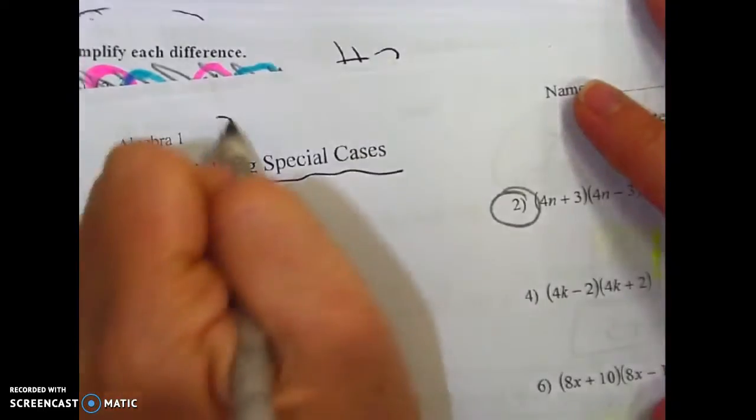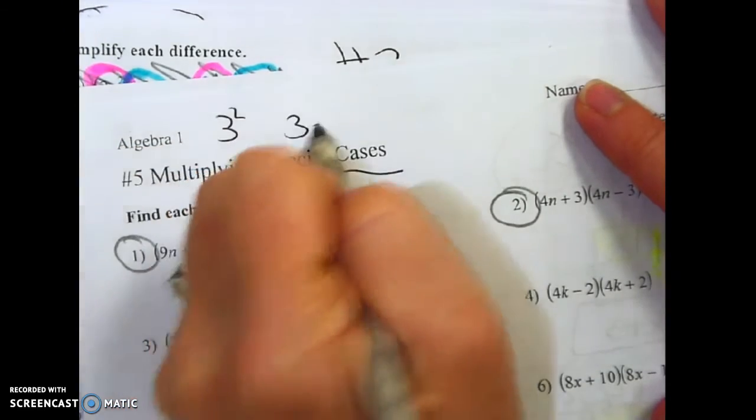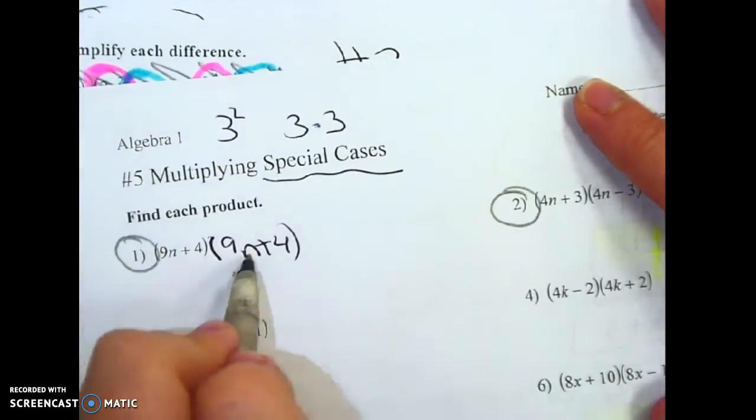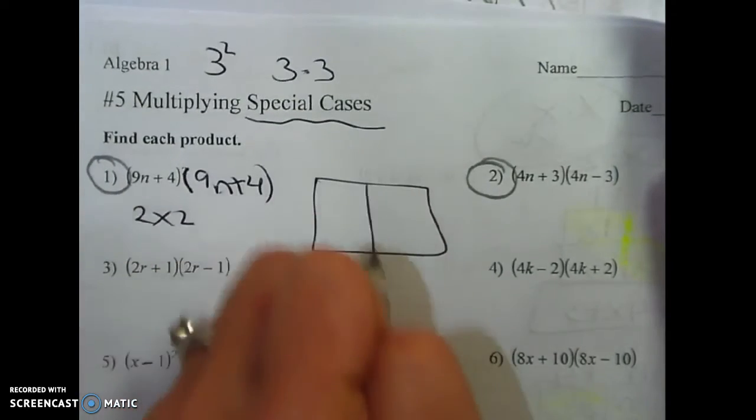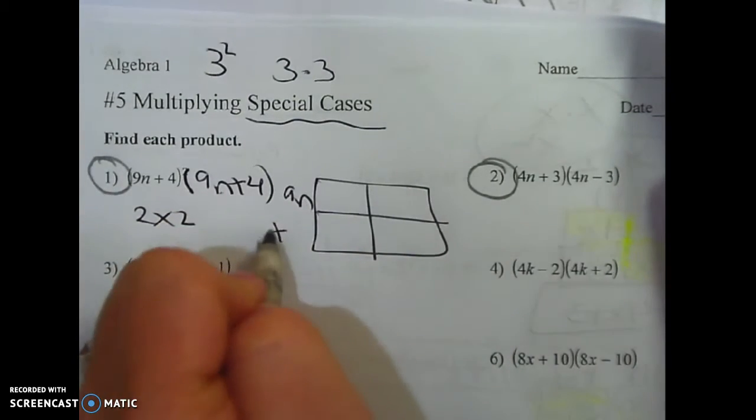That's what squared means. If you have 3 squared, that means 3 times 3. So if you have this whole thing squared, you write it two times. Now you state the dimension, 2 by 2. And you do your 2 by 2 box, just like the previous page.